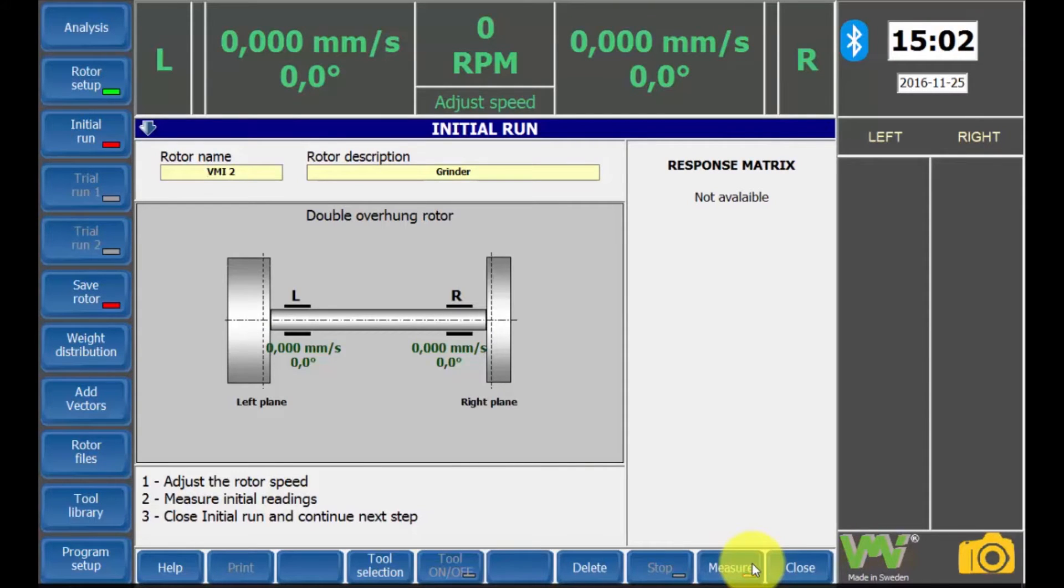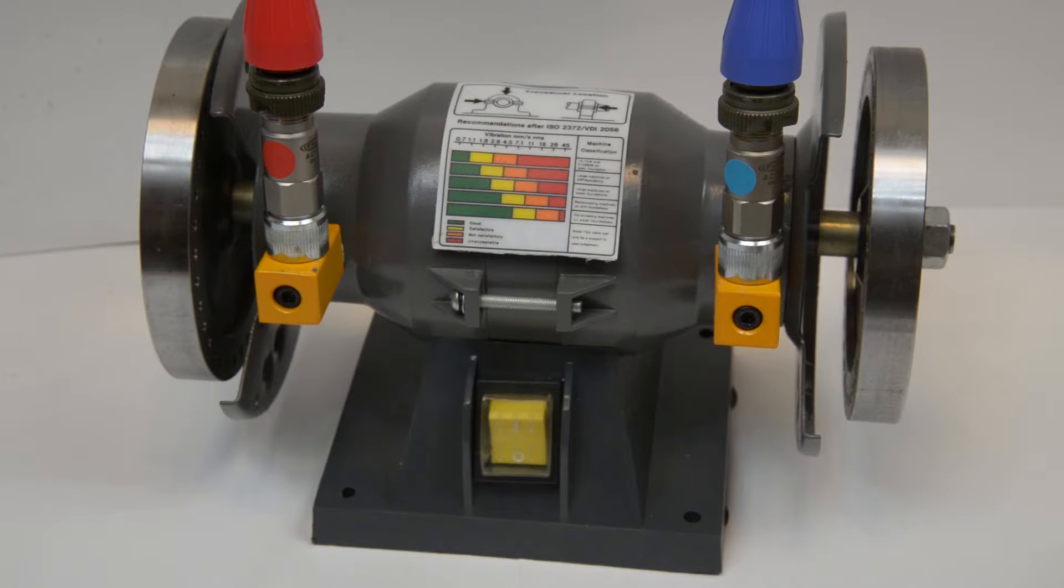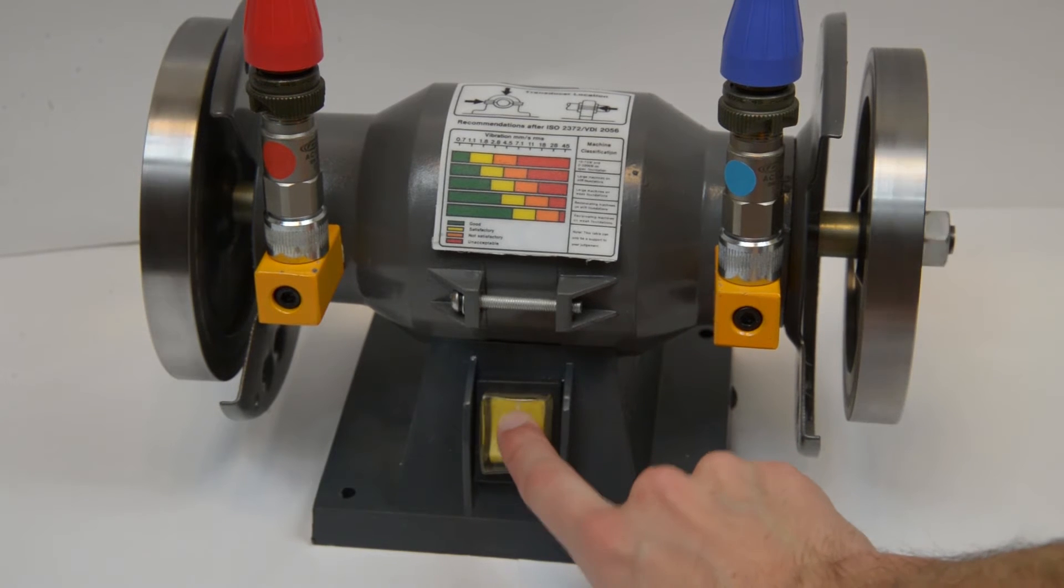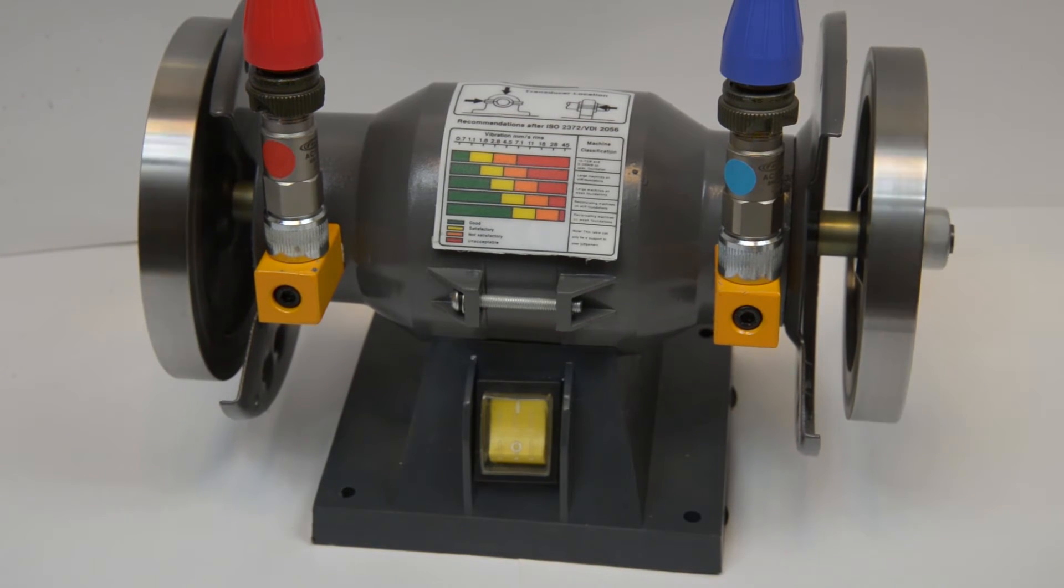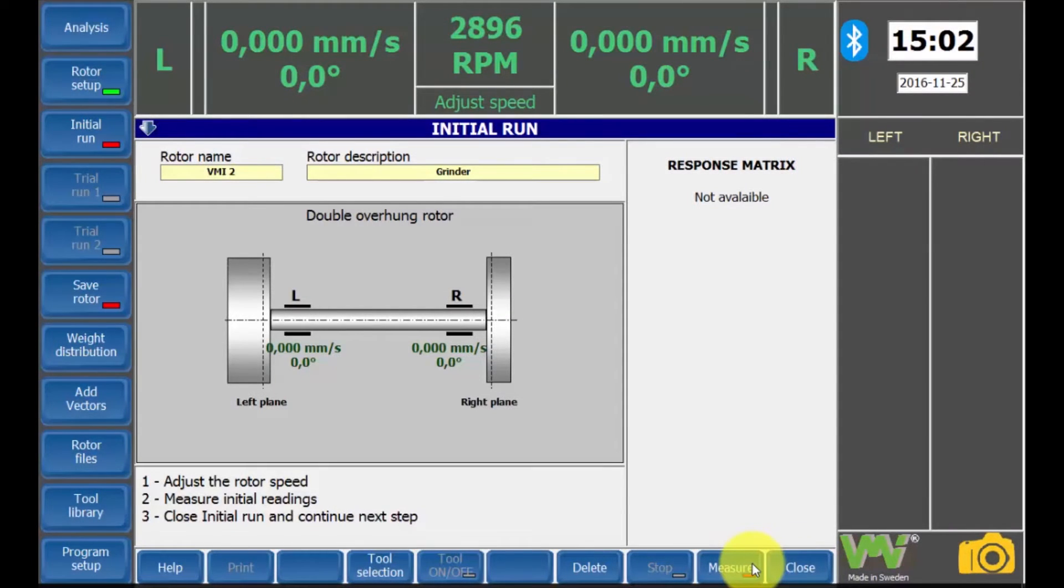Before the actual balancing can be performed, the characteristics for the router must be determined. This is done without any balancing weights mounted. Start the machine. The rotation speed is displayed at the top of the screen. When the RPM indication has been stabilized, press the measure button.